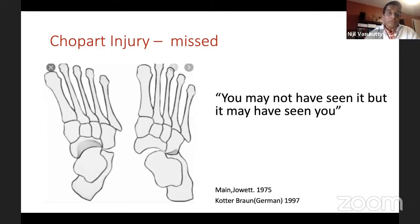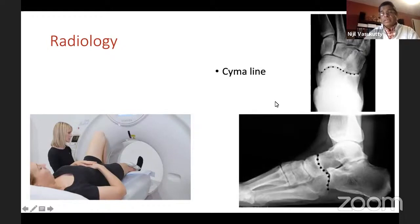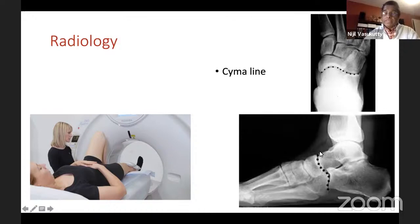For investigation, start with standard plain X-rays as in any other condition. Be aware of the Syma line — this is a smooth, wavy line that connects the talonavicular and the calcaneocuboid joint. If you have a strong suspicion and your plain X-ray does not give you enough information, have a very low threshold to go in for a CT scan.